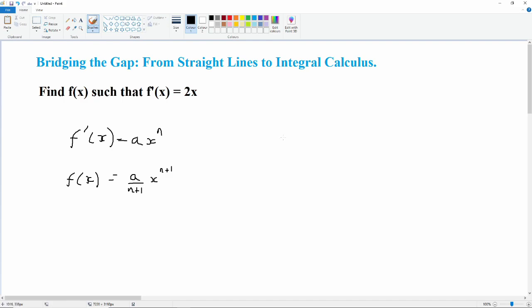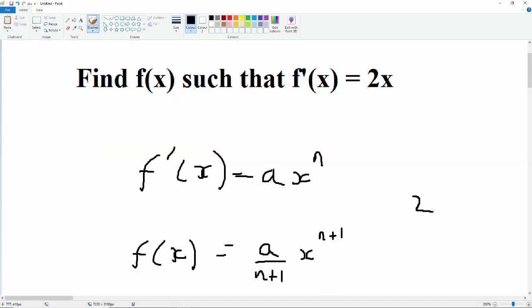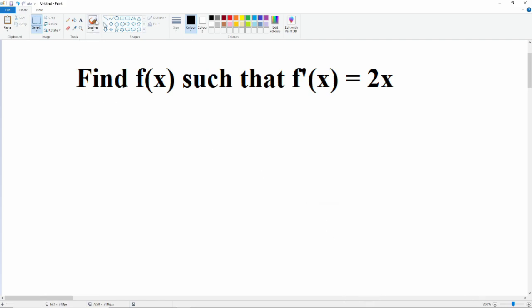So with our 2x, all we do is say, this is 2x to the power 1. So then we have to add 1, which makes it a 2, and then we divide by the new index. And 2 over 2 cancels out, and that gives us our x squared. So our answer is f of x is equal to x squared.